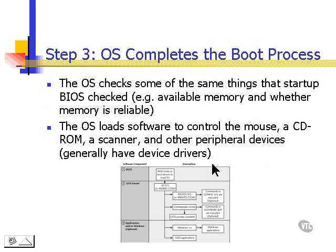Now the operating system is smarter than BIOS, so the operating system will check some of the same things that BIOS checked. For example, it will check memory, but it will also check whether memory is reliable or not. Then the operating system will load the software to control a mouse, CD-ROM, possibly scanners, and other peripheral devices that are connected to the computer.